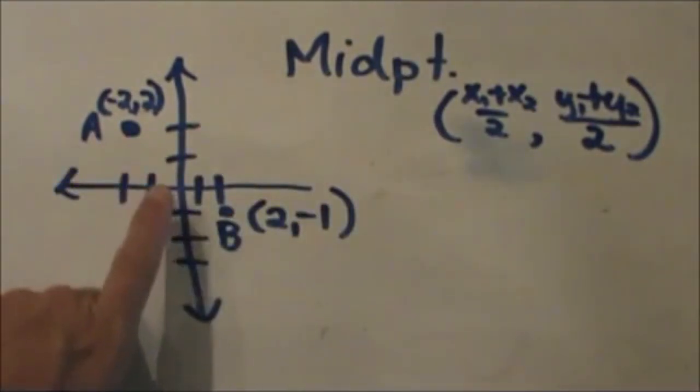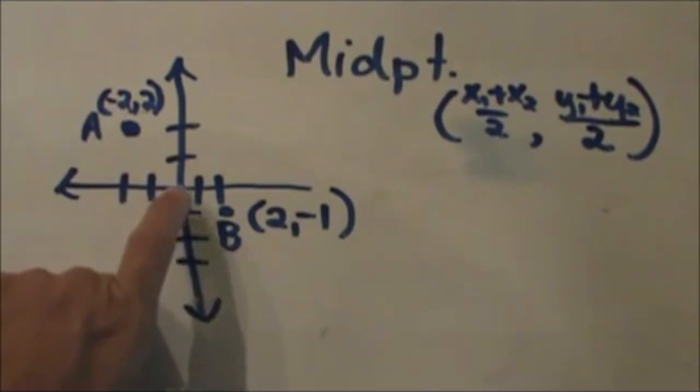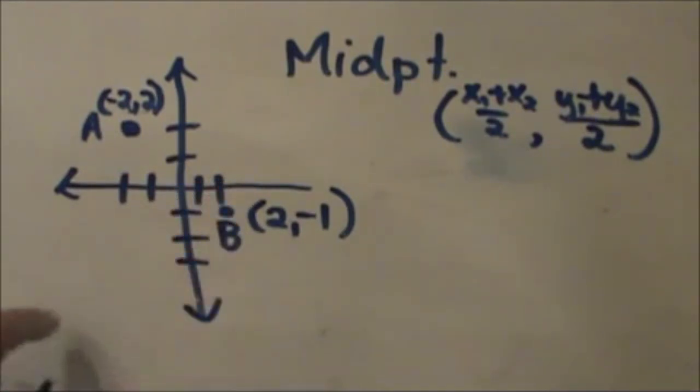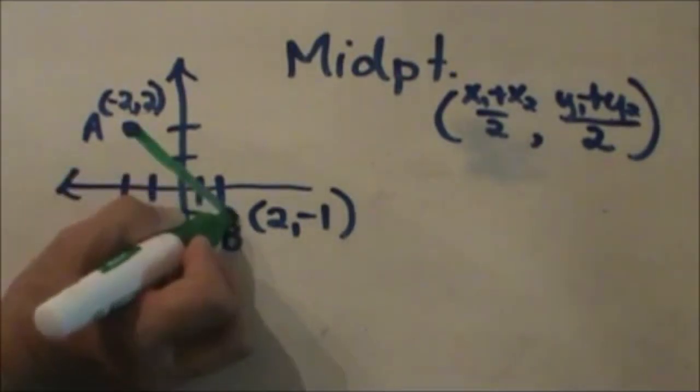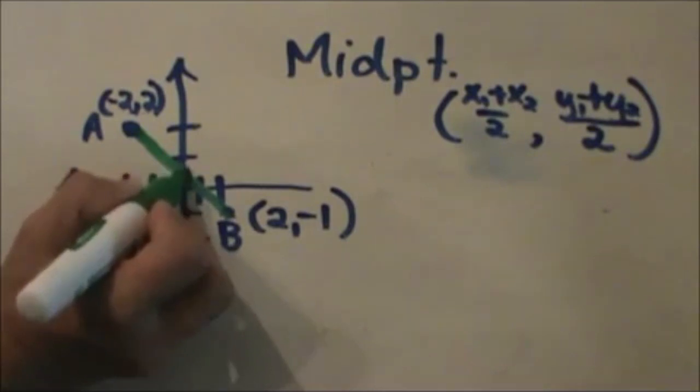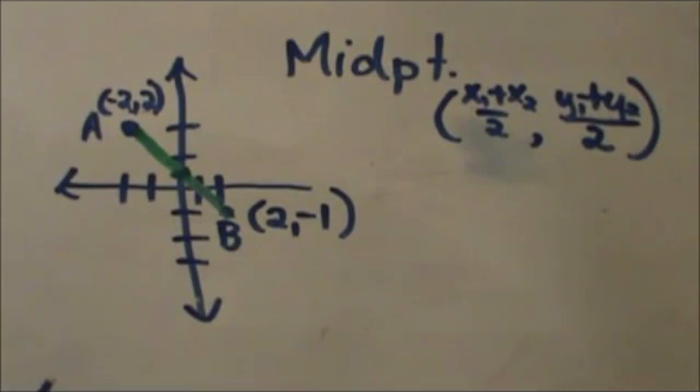Let's look at the graph. I have graphed the point A and the other point B, and we are going to find the midpoint of the segment. If I connect these two points together, I can estimate that the midpoint is going to be about here. Midpoint just means halfway. Now I am going to show you graphically how to do this.